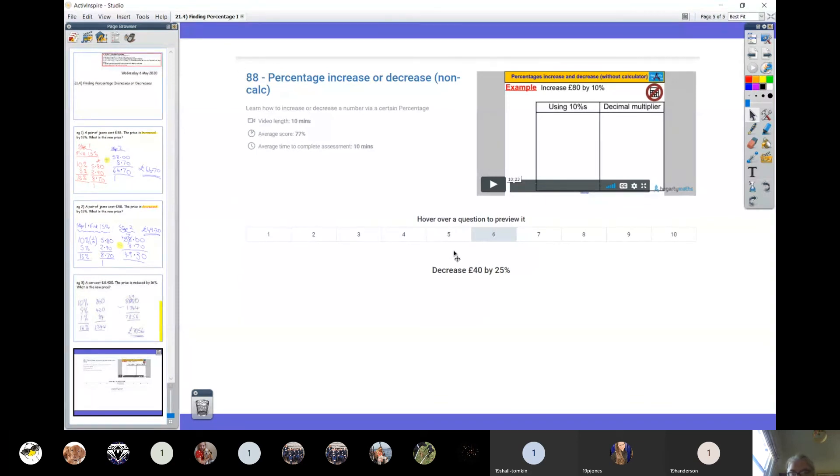So this is the Hegarty Maths I want you to do, please - number 88. As you can see, you're just going to get questions like this: decrease £40 by 25%. That's it for today's lesson, guys. You're all working really well, keep it up. I look forward to seeing your good marks, and I particularly look forward to seeing any of your neat notes if you've uploaded them onto Teams. Cheers, guys.